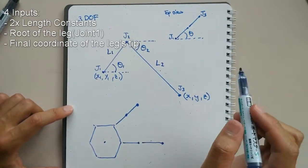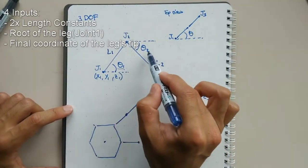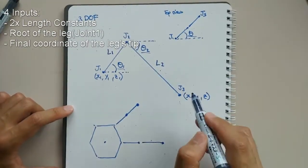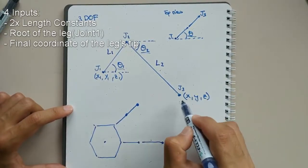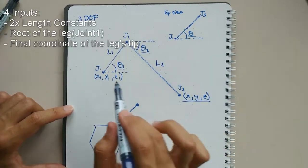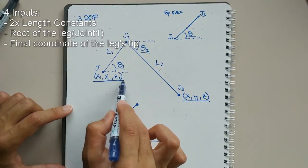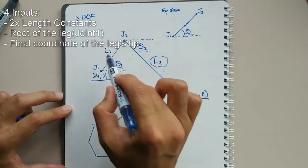In this video, I explained how to find those three angles from four different inputs: the final position of the leg's tip, the root of the leg, and two length constants.